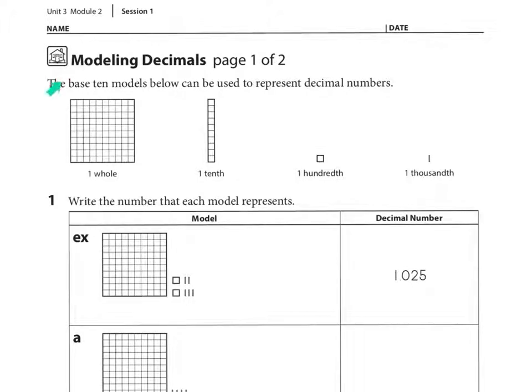It says the base 10 models below can be used to represent decimal numbers. Here we have one whole, one tenth, one hundredth, one thousandth.